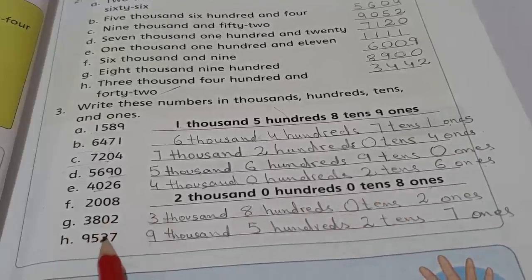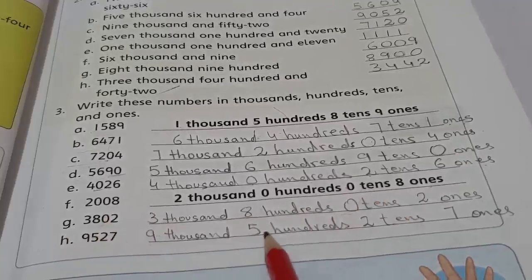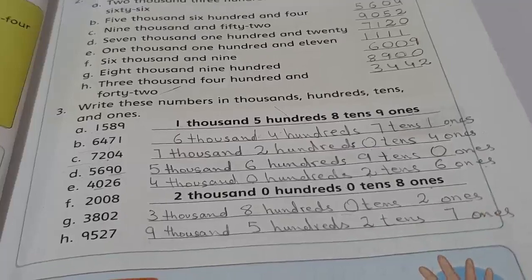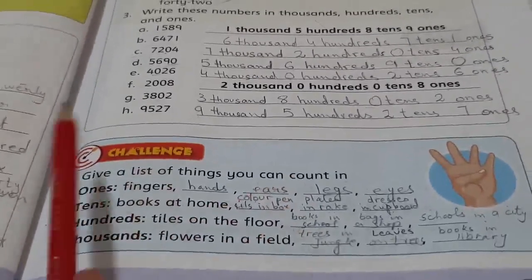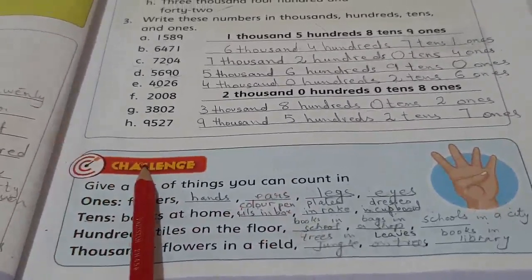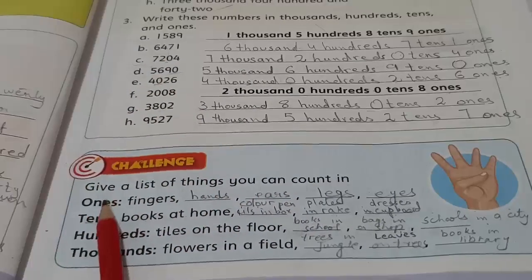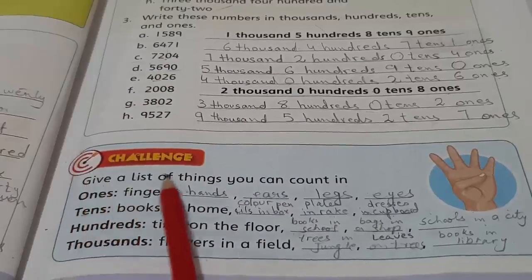5690 - five thousand, six hundreds, nine tens, and zero ones because there is no value in the ones column. 4026 - four thousand, zero hundreds, two tens, and six ones. There is no number given in the hundred column so we write zero.